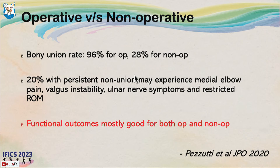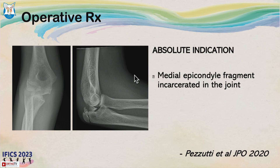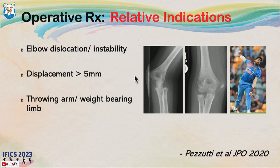However, the systematic review concluded that functional outcomes are mostly good for both operative and non-operative treatment, even in cases of non-union — and this is where the entire controversy lies. The only real absolute indication for operative treatment is a medial epicondyle fragment incarcerated into the joint. All other indications are relative, including elbow dislocation or instability, displacement more than 5 mm, and fracture in a throwing arm or weight-bearing limb, though there is no strong evidence supporting surgery in these cases.